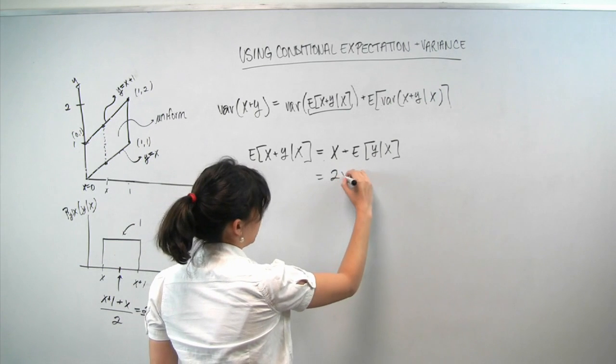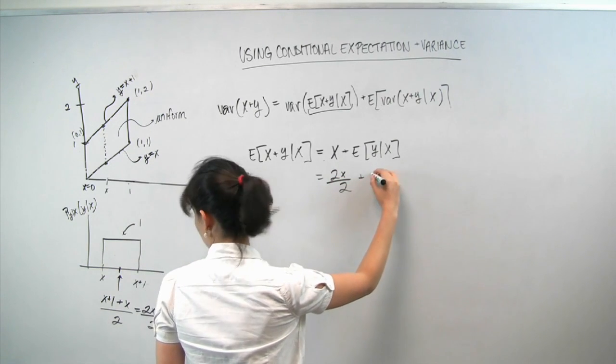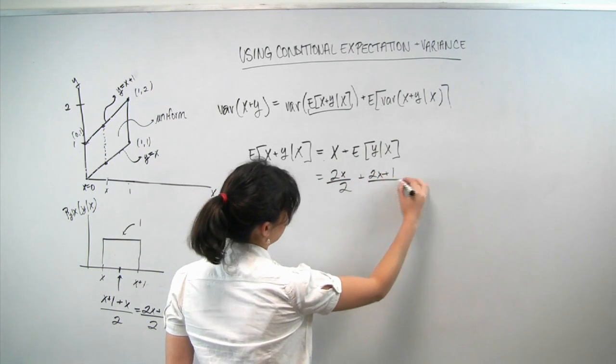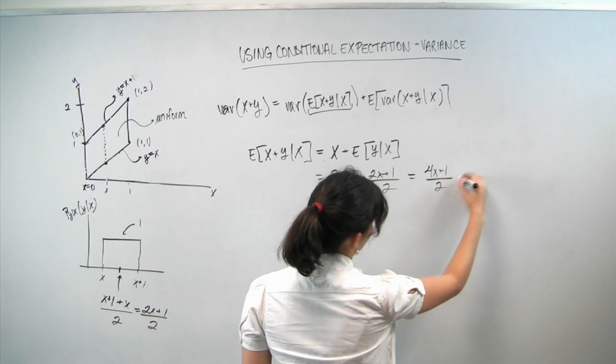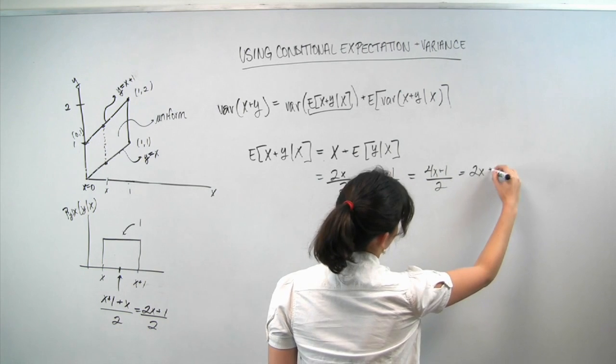we get 2x over 2 plus 2x plus 1 over 2, which is 4x plus 1 over 2, or 2x plus 1 half.